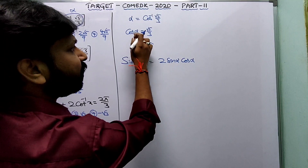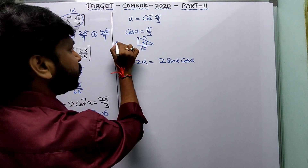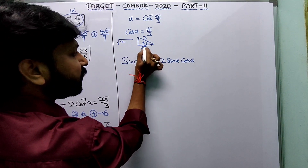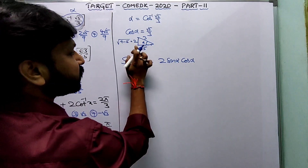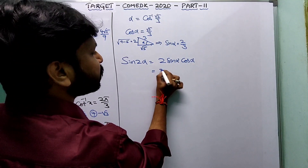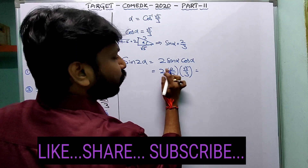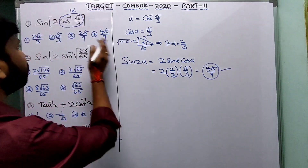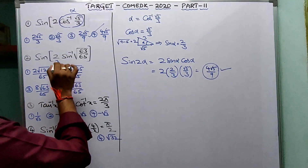Consider a right-angle triangle. cosα = adjacent/hypotenuse = √5/3. The opposite side = √(3² - (√5)²) = √(9-5) = √4 = 2. So sinα = 2/3. Therefore sin(2α) = 2·(2/3)·(√5/3) = 4√5/9. The fourth option is the correct answer.